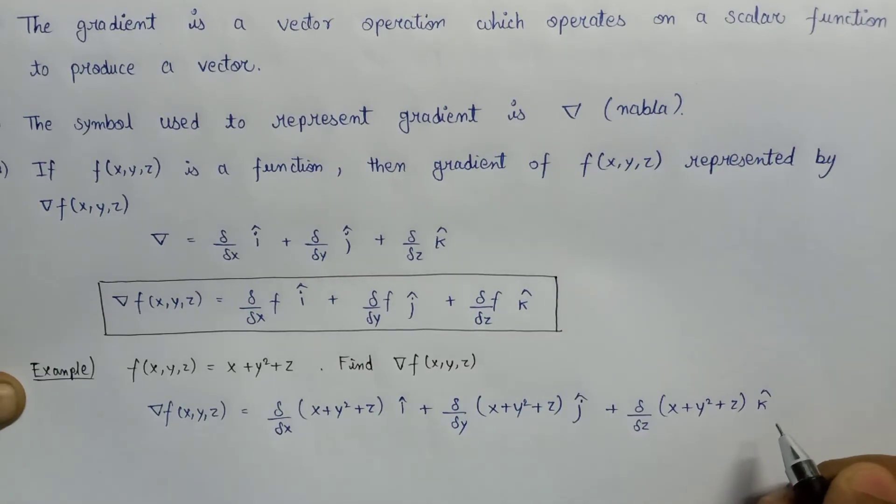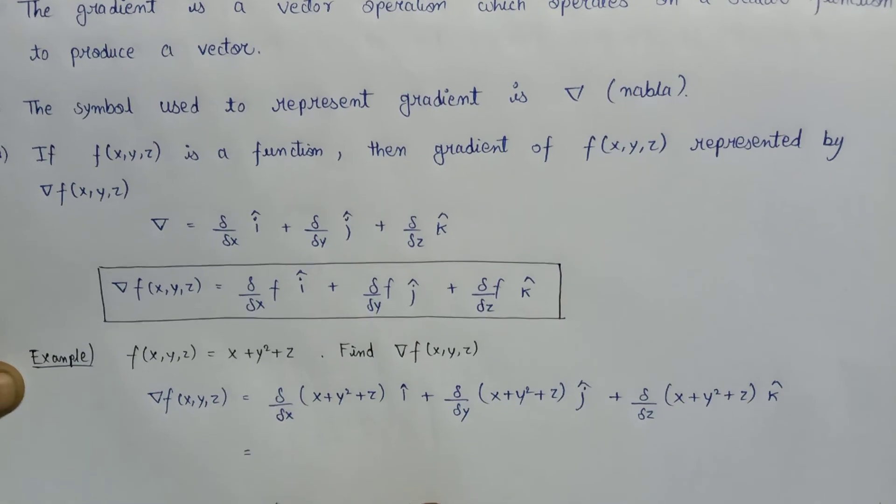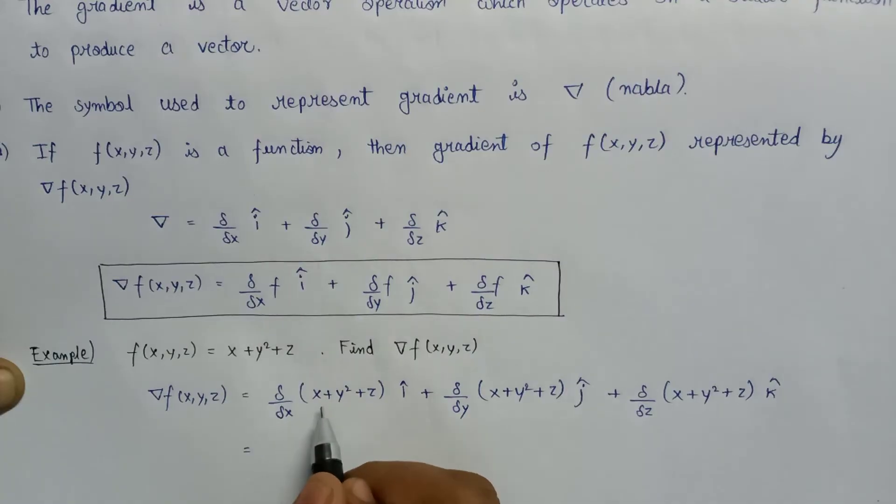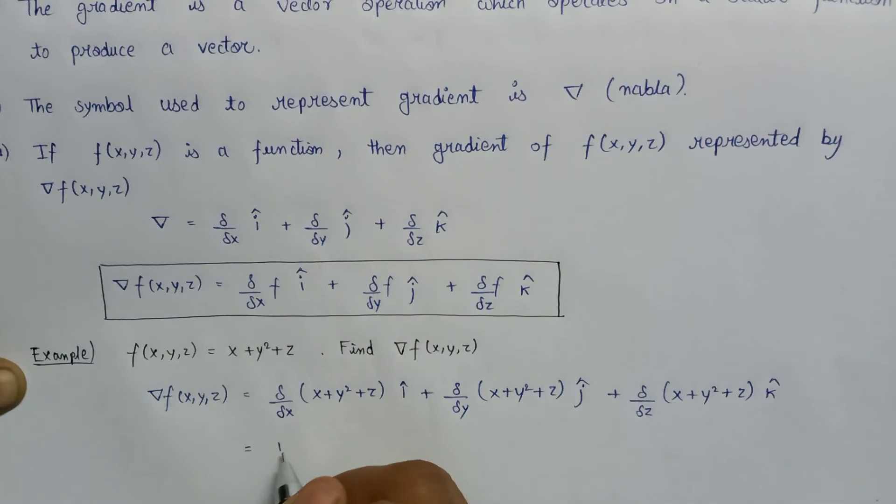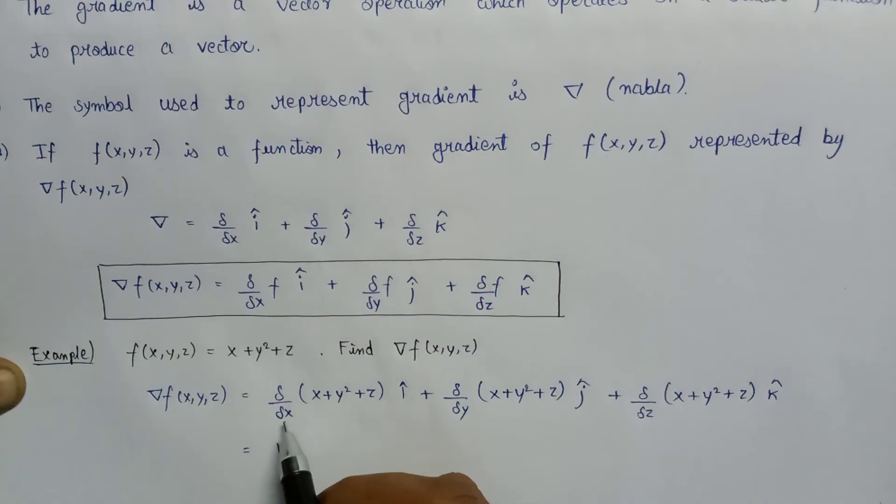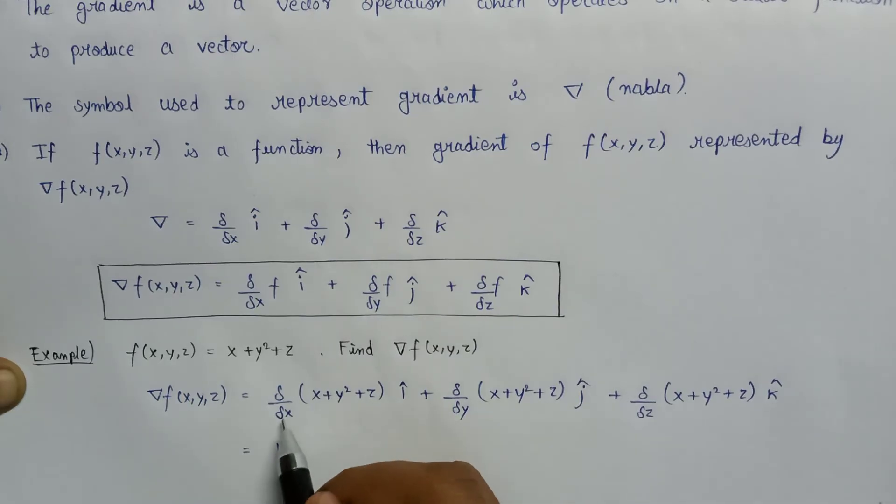On differentiating, we get del x over del x will become 1. Then the differentiation of y square with respect to x will be 0, and the differentiation of z with respect to x will be 0.